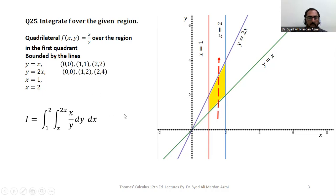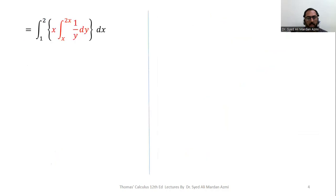So after creating this integral, next step is the solution. With respect to y, x is constant and in double integral, we always solve inner integral first and then we will apply the outer integral on the results of inner integral. With respect to y, x is constant. So we can take it outside and we will integrate 1 over y. Integration of 1 over y is natural log of y. Limits are x to 2x.